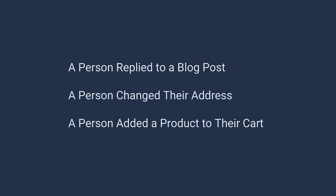We can then use the knowledge that these things have happened to do something useful. If someone replies to a blog post, we can email the blogger. If someone changes their address, we can send them marketing materials about furniture and home decor. If someone adds a product to their cart but never checks out, we can email them more information about the product later, or let them know there's a discount running for a similar product. By knowing these things have happened, we can do a great many things — and at its core, this is what it means to be a domain event.